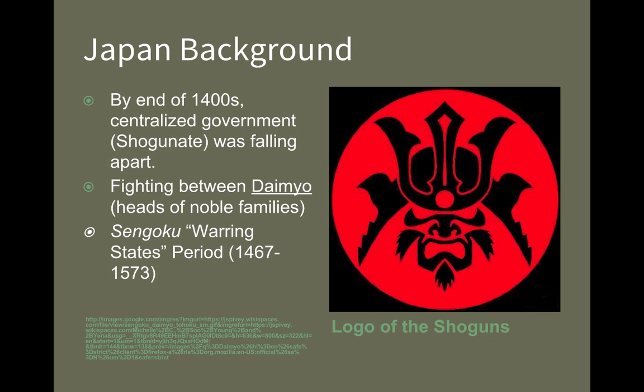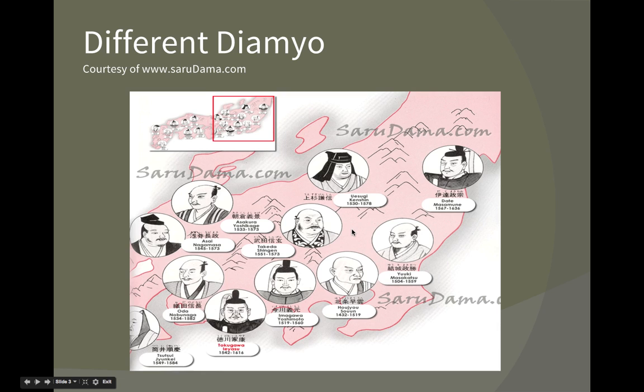Before the Tokugawa shogunate period, Japan was experiencing about a century-long period of chaos and instability. Just like pre-Qin China, you are dealing with a warring states period. Japan called it the Sengoku period, and that happened from 1467 to 1573. Basically the country was in a state of lawlessness and chaos — a large-scale civil war where various daimyos, who were basically the heads of noble families, were fighting one another.